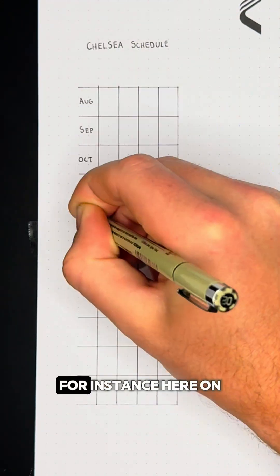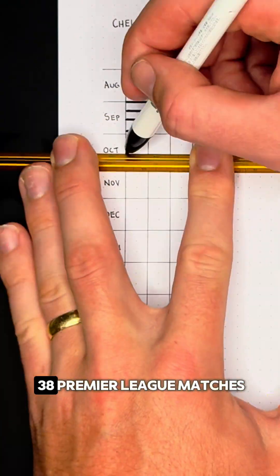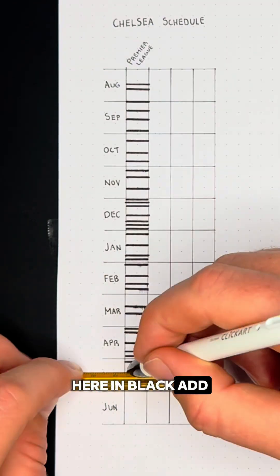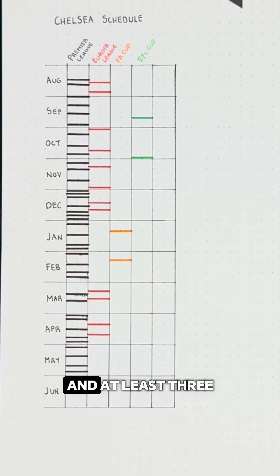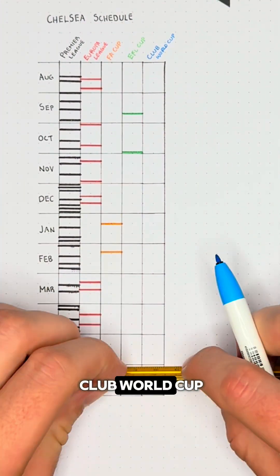Take Chelsea's schedule this year, for instance, here on the left. They will play their 38 Premier League matches here in black, add 12 Europa League games here in red, two each in the FA Cup and EFL Cup here, and at least three more in the FIFA Club World Cup this summer.